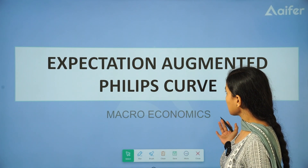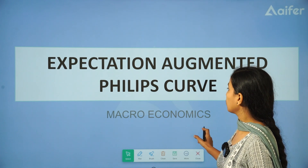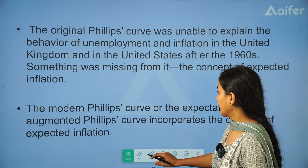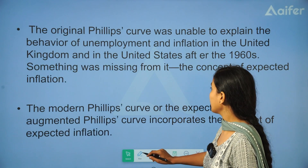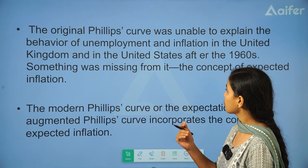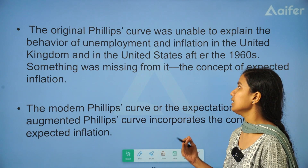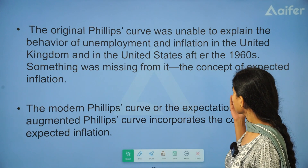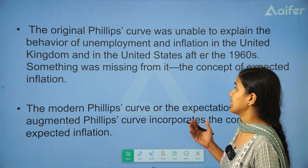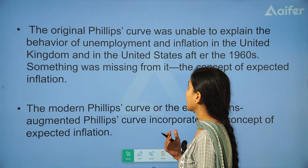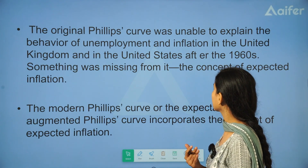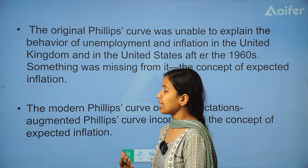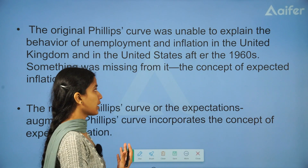So let's go to the expectation-augmented Phillips Curve. What is the original Phillips Curve? It's a trade-off between inflation and unemployment. But after the 1960s, in the US and the UK, the situation explained what the original Phillips Curve is.